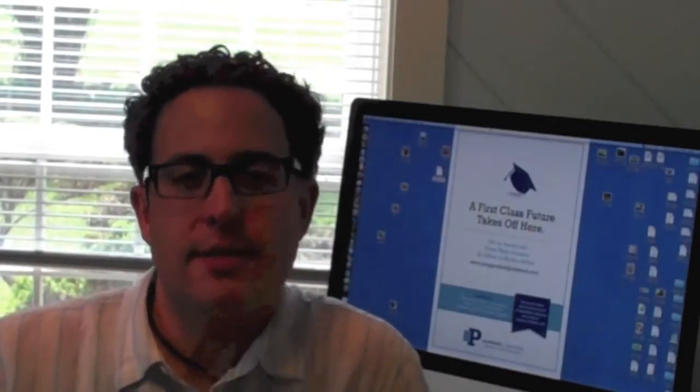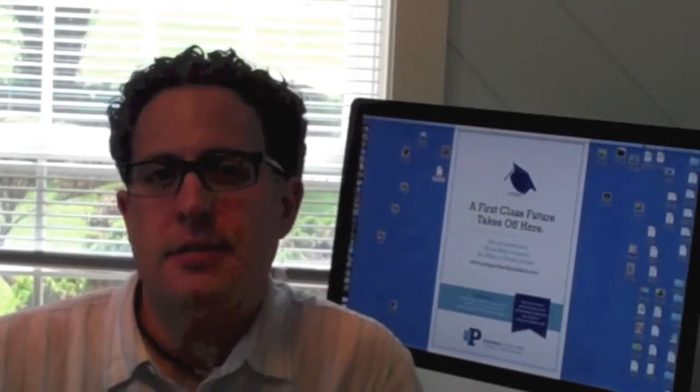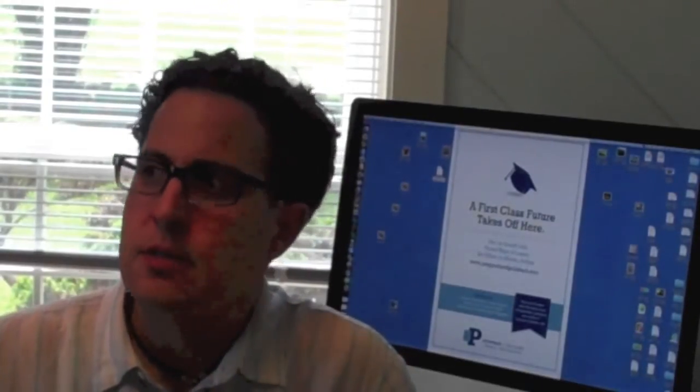The ACT science section is one of the trickier sections on the ACT test. Half the battle to doing well in the ACT science is pacing yourself wisely. You got 35 minutes to do roughly 40 questions. You basically want to spend about 5 minutes per passage, if there's 7 passages.